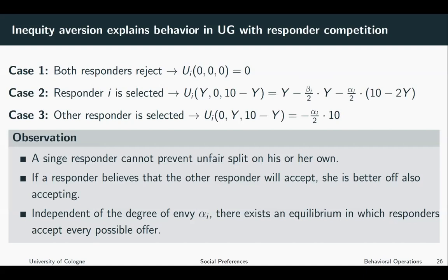Importantly, if a responder believes that the other responder will accept, she is better off also accepting. In this case, if I assume the other one is going to accept, case one is ruled out because it's not feasible. I have the choice between being selected — even if it's a really unfair deal — or the other being selected. No matter how unfair the deal is, it's still better than being the one left out. This means even if I care a lot about envy and suffer from disadvantageous inequality, I might still want to accept just to rule out being left out.